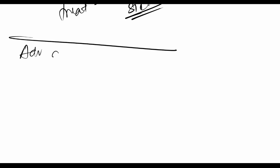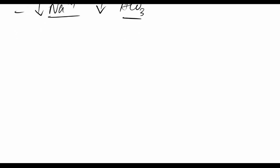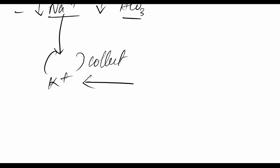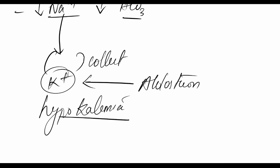Now for adverse effects: there is systemic acidosis, loss of sodium ions (hyponatremia), and loss of bicarbonate ions. Additionally, as sodium ions progress down the nephron to the collecting duct, they are exchanged for potassium ions under the control of aldosterone, leading to depletion of potassium ions — hypokalemia. There is also the cross-allergy reaction with hyperglycemic and antibacterial drugs.